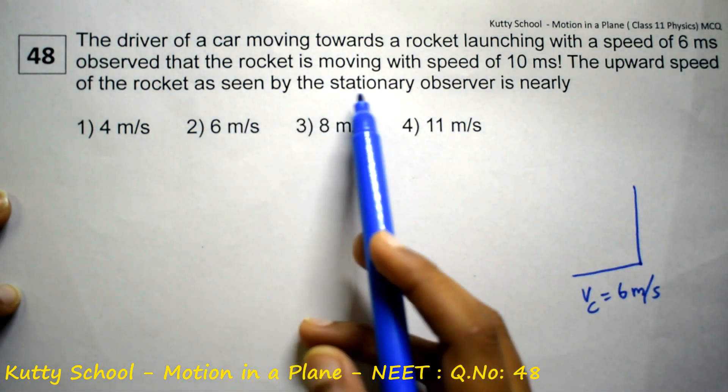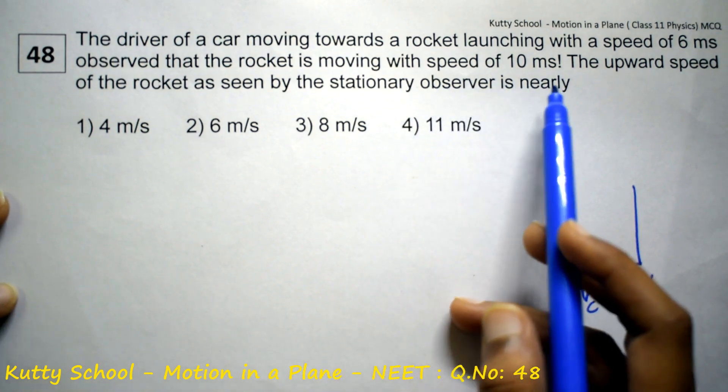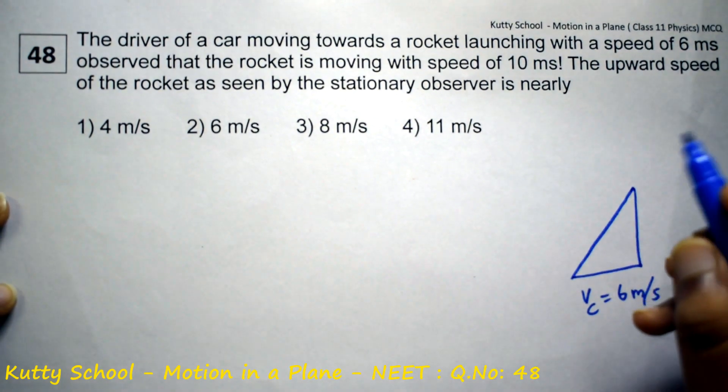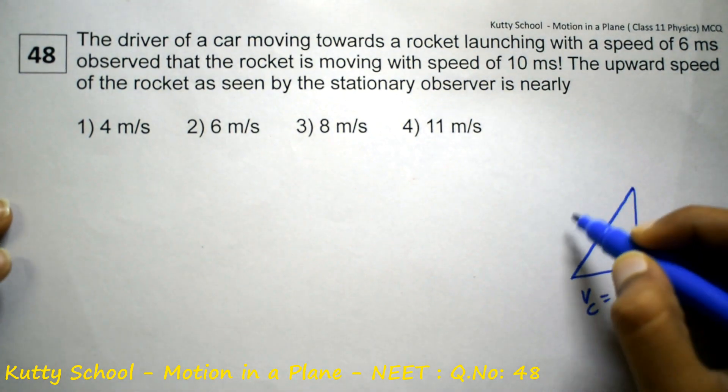Observed that the rocket is moving with a speed of 10 meters per second. Rocket launching is 10 meters per second.